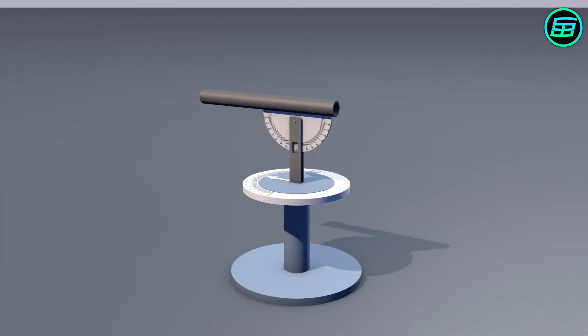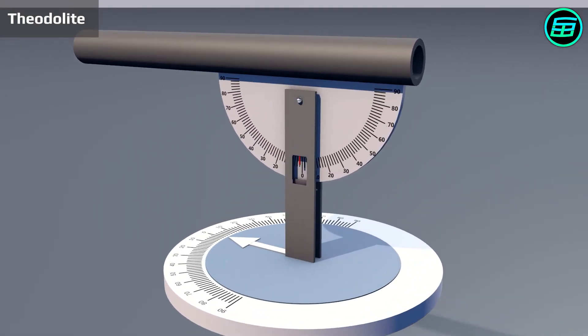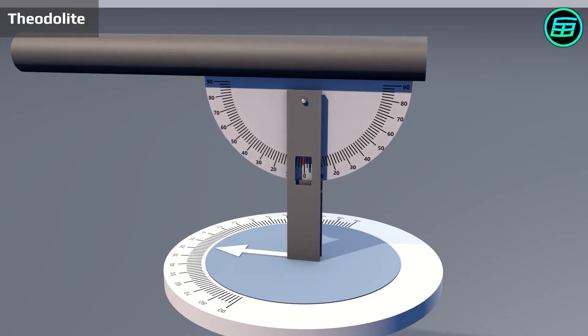Here's a simple version of a theodolite, an instrument used for measuring angles both horizontally and vertically.